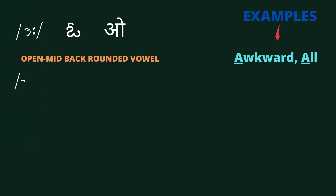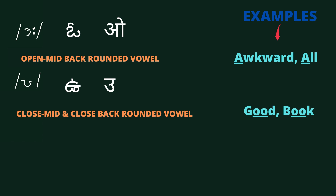This is pronounced as /ʊ/. It is a close-mid and close back rounded vowel. Examples are: good, book.